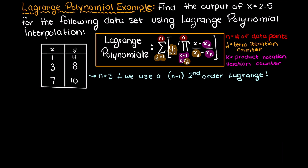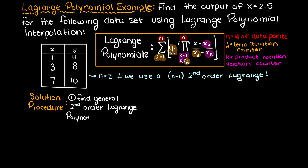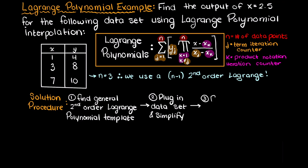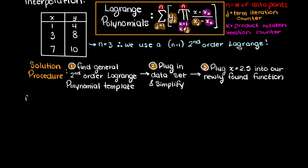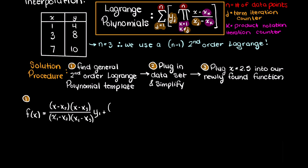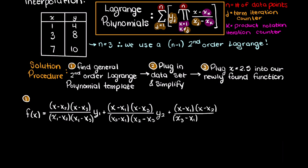Now let's talk about how to solve this problem. We will first begin by using the formula above to develop our general second order Lagrange polynomial equation. Then we will plug in our known discrete data points, simplify our polynomial, and lastly, once we have the Lagrange polynomial developed, we can plug in the input that we are asked for and finally solve for the output. Our first step is to develop the general second order Lagrange polynomial equation, which I demonstrated in the past video. In brief, we know that we will need one term for each data point we have, as we need our Lagrange polynomial to pass through every data point. I will rewrite the general second order Lagrange polynomial equation from our last video.